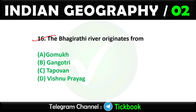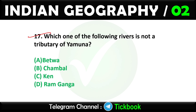Question sixteen: The Bhagirathi river originates from. Option number A is the right answer: Gomukh. Question seventeen: Which one of the following rivers is not a tributary of Yamuna? Option number D is the right answer: Ramganga. Betwa, Chambal, and Ken are tributaries of Yamuna.